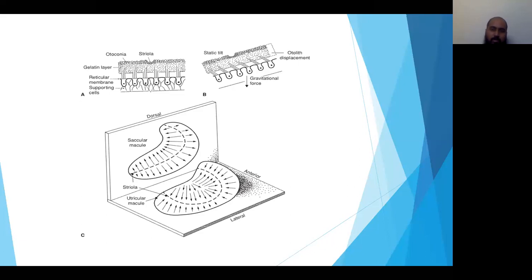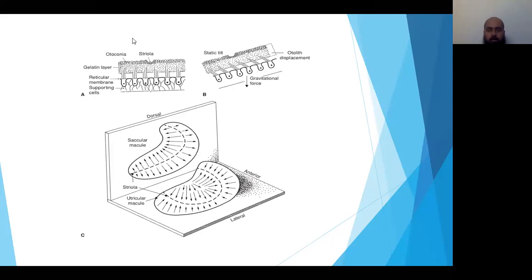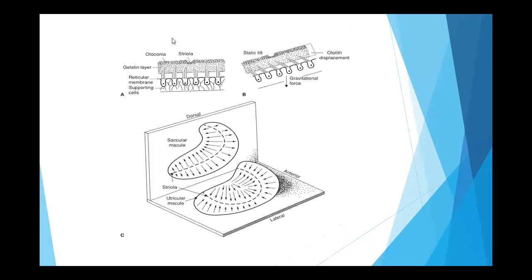The same principle applies to the saccule. The saccule has hair cells oriented in two opposing directions: if a person moves upward, one hair cell is excited while another hair cell pointing downward sends an inhibitory response. So both inhibitory and excitatory responses come from the same saccule and utricle.